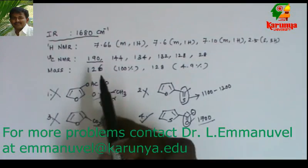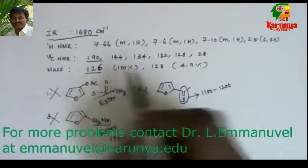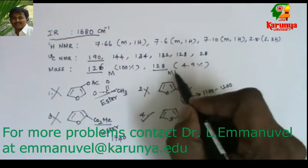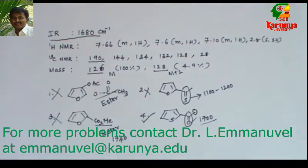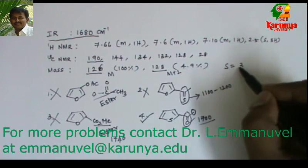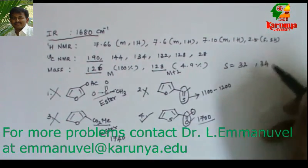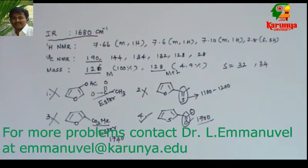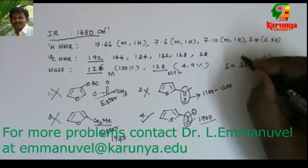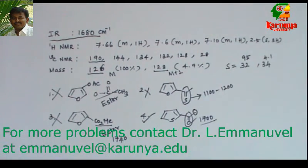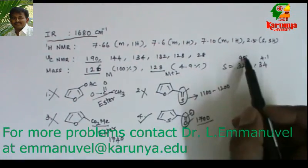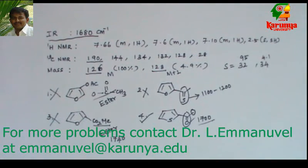One more thing to note in this problem: what are the peaks at 126 and 128? The peak at 126 is the molecular ion peak (M), and 128 is the M+2 ion peak. This is because sulfur can be ³²S or ³⁴S. The relative abundance of ³⁴S is around 4.1, while ³²S is 95. That ratio is reflected here: if M is 95, M+2 should be around 4.1.